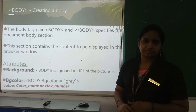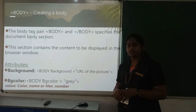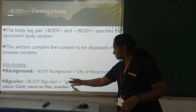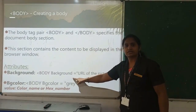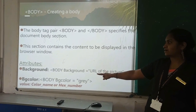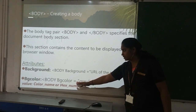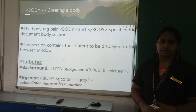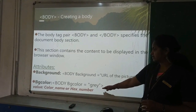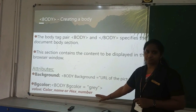The main attributes of the body tag include background — you can give a picture or color as the background value. The syntax is: body background equals the image or color. Another attribute is bgcolor (background color). For example, body bgcolor equal to gray — you can give a color name or a hex color number.